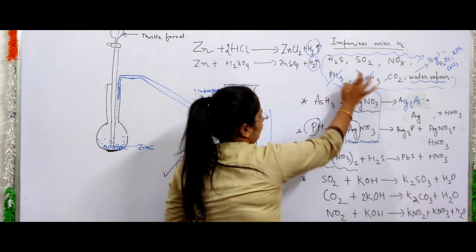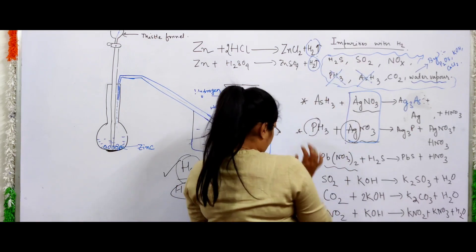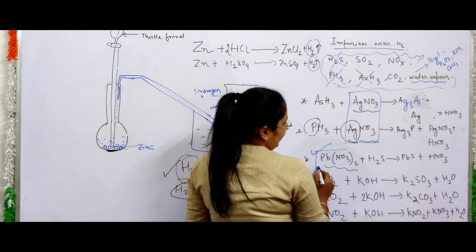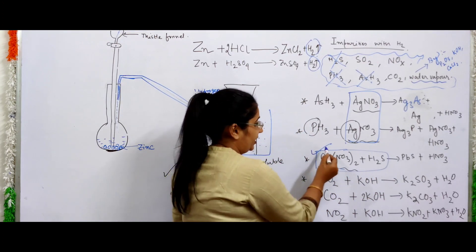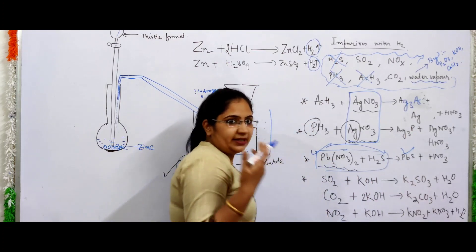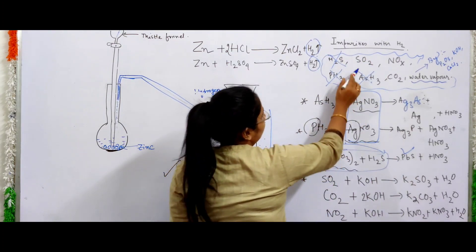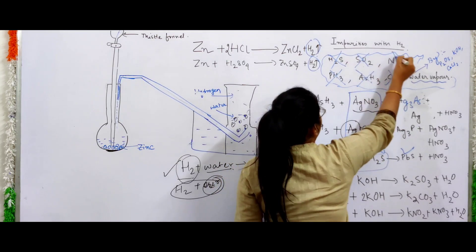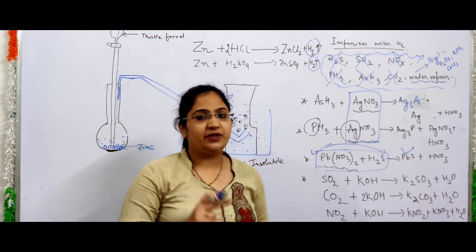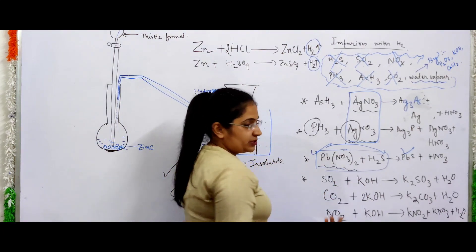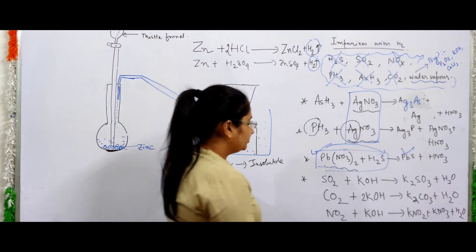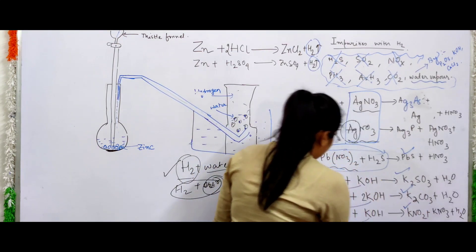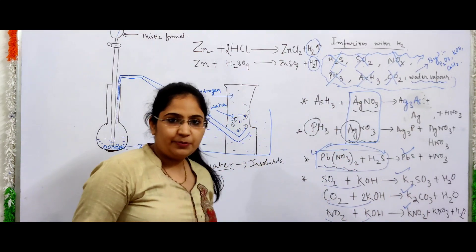To remove H2S, we use lead nitrate solution. Lead nitrate reacts with hydrogen sulfide to form lead sulfide, removing that impurity. To remove CO2, NO2, NO3, and other oxides of nitrogen and sulfur, we use KOH — caustic potash — which forms potassium sulfate, potassium carbonate, and potassium nitrate, removing all those impurities.